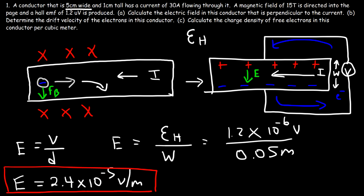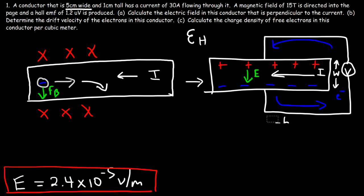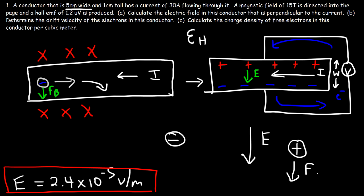Now let's move on to part B: determine the drift velocity of the electrons in this conductor. Focusing on the electron, we have an electric field going in the negative y direction. A proton feels a force that accelerates it in the direction of the electric field, but a negative charge feels a force opposite to the electric field. So the electric force on the electron is in the positive y direction, and the magnetic force is in the negative y direction.